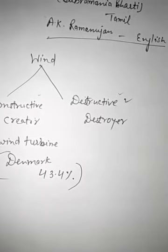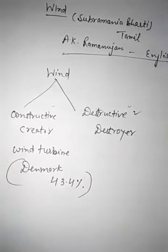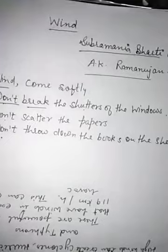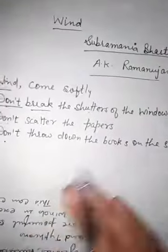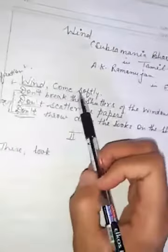So let's read the poem. Poem Wind, written by Subramanian Bharti, translated by A.K. Ramanujan. First line: wind comes softly. Wind comes softly.